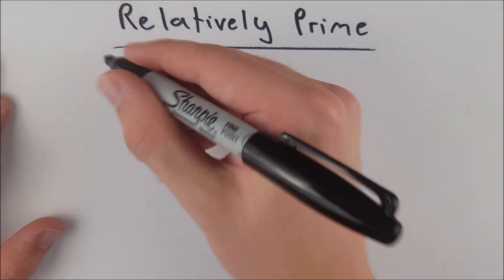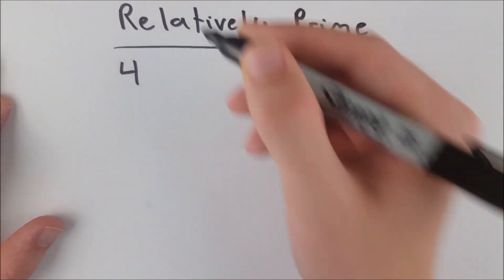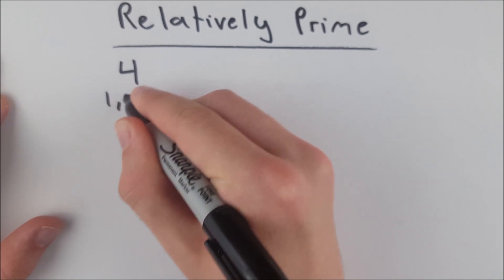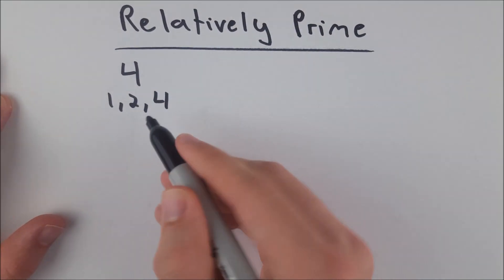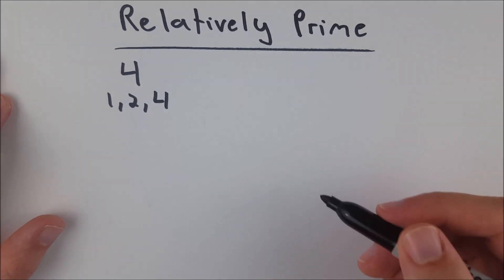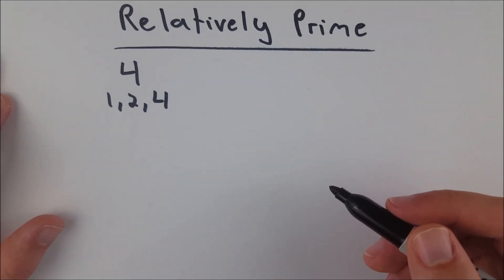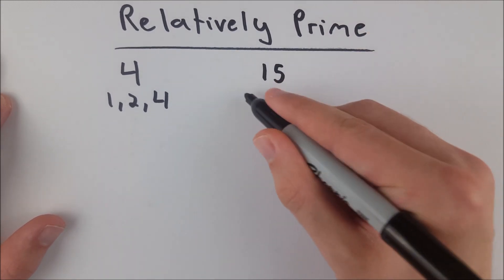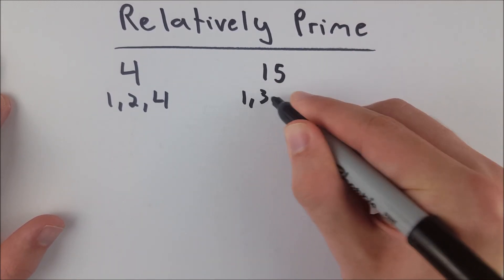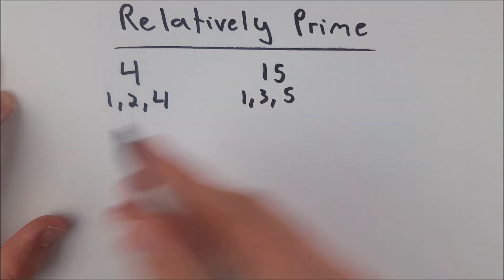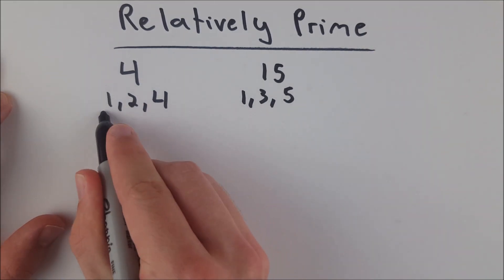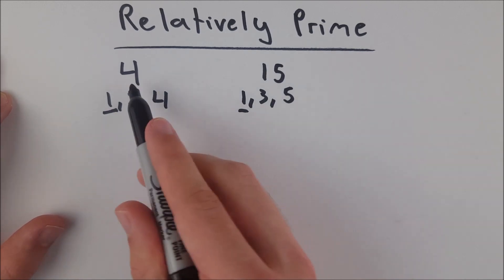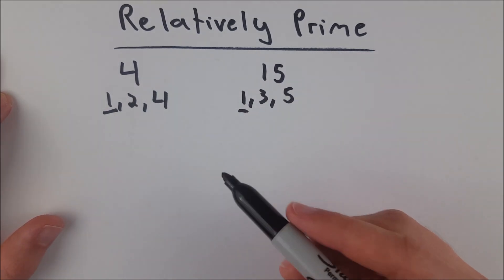For example, let's look at four. What factors does four have? Four has factors one, two, and four — those are the only three factors that four has. And if we look at a number like 15, the only factors 15 has are one, three, and five. You can see they have no factors in common besides one, and therefore four is relatively prime to 15.